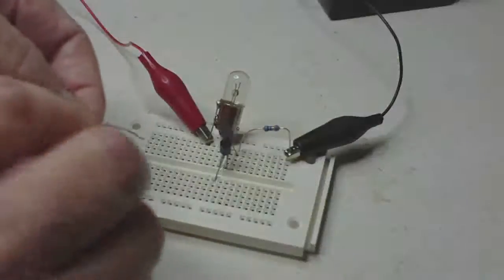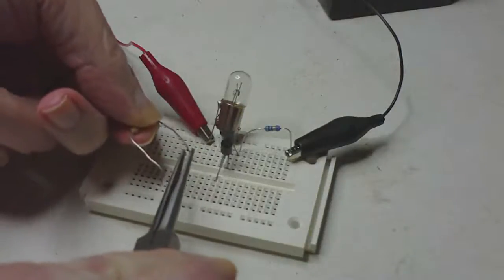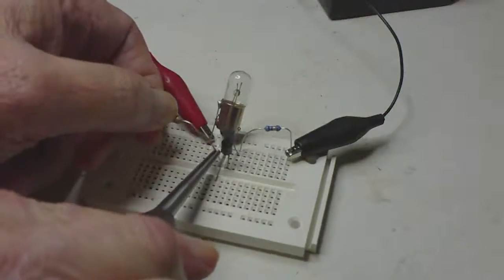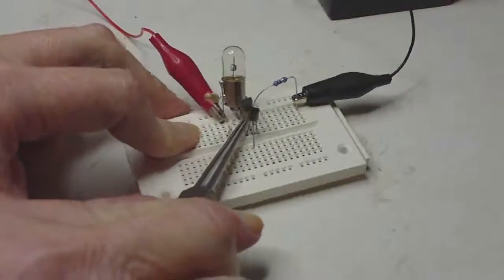And now when I connect that 100k ohm resistor to the collector, the bulb now lights.